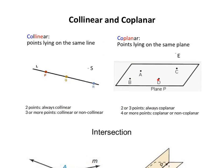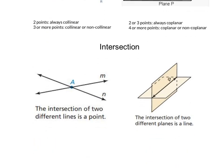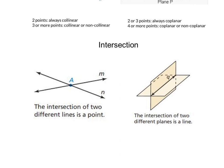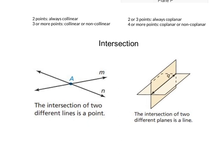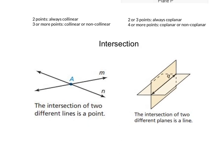For intersection, we are talking about when two geometric figures meet each other. First case here is two lines, M and N, intersect. Then the intersection is point A. The intersection of two different lines is a point.